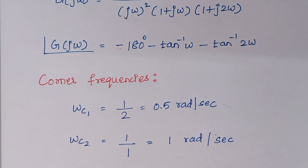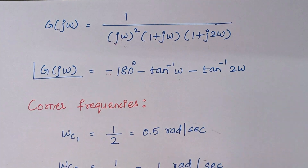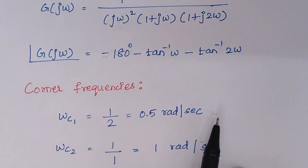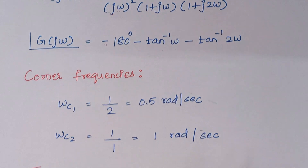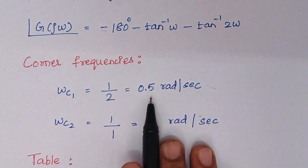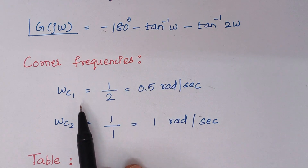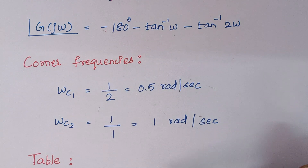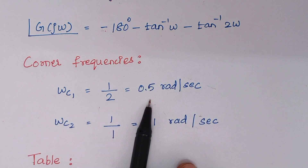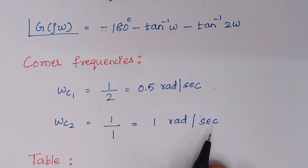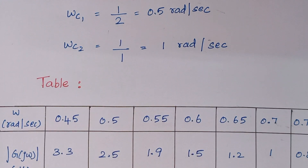The next step is to find corner frequencies. Corner frequencies are found by taking the reciprocal of the coefficient of ω directly from the problem. The coefficient of ω here is 1, so reciprocal is 1 by 1, which is 1. The coefficient in the other term is 2, so reciprocal is 1 by 2 which is 0.5. Corner frequencies must be arranged in ascending order, so ωc1 is 0.5 radians per second and ωc2 is 1 radian per second.